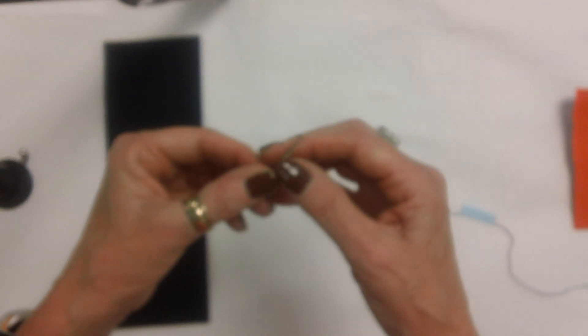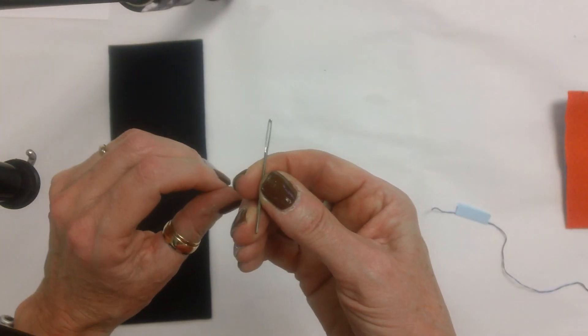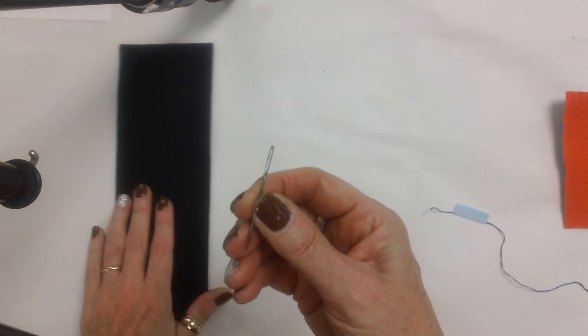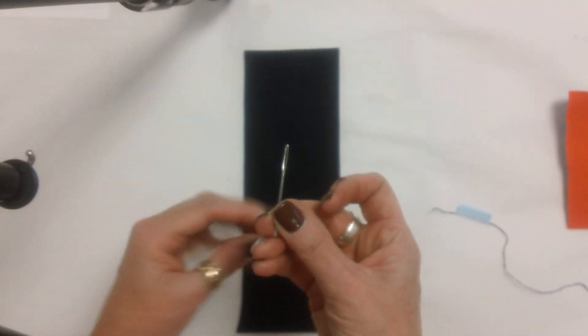You're going to get a needle, and the eye of the needle - this one is pretty big so that'll make it a little easier. I'm going to do this on the black background so you can see what I'm doing.